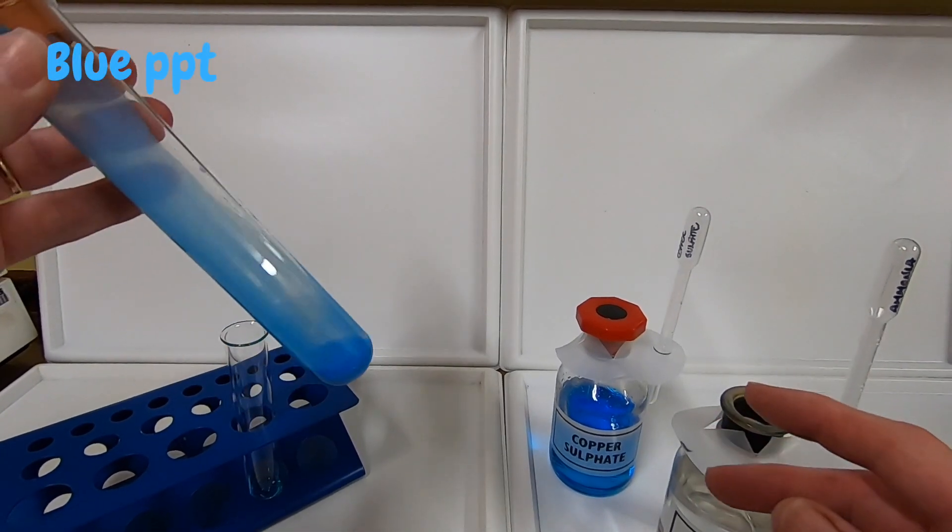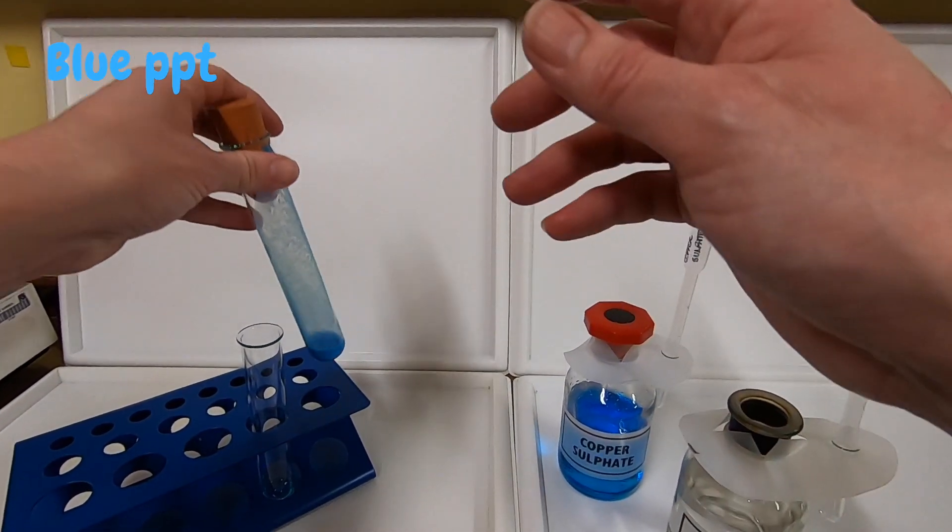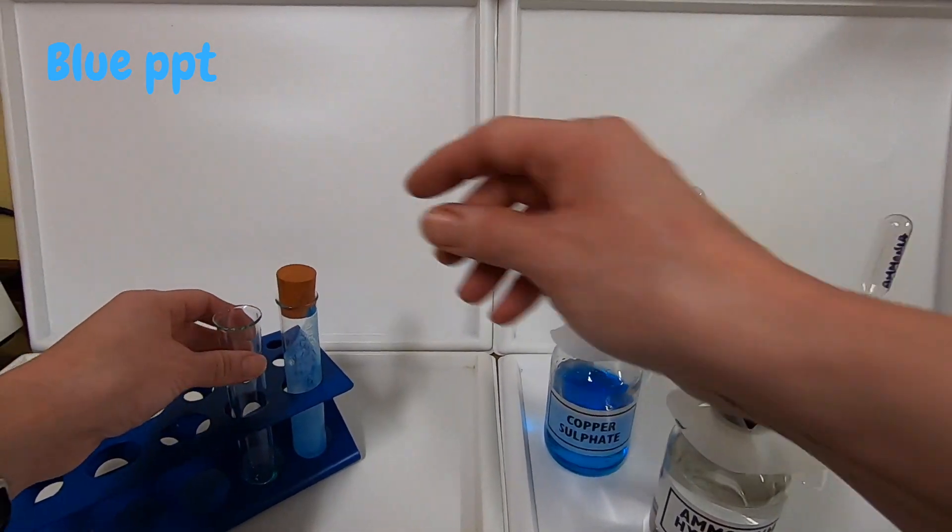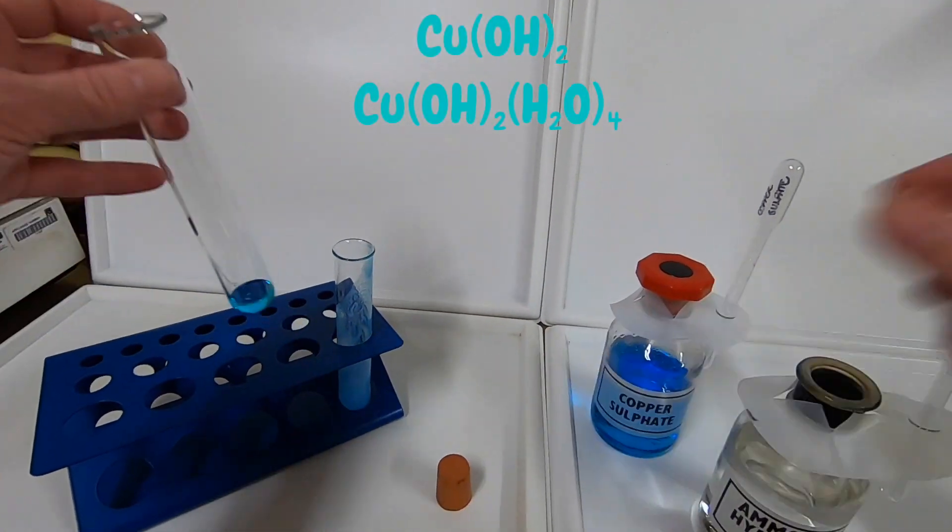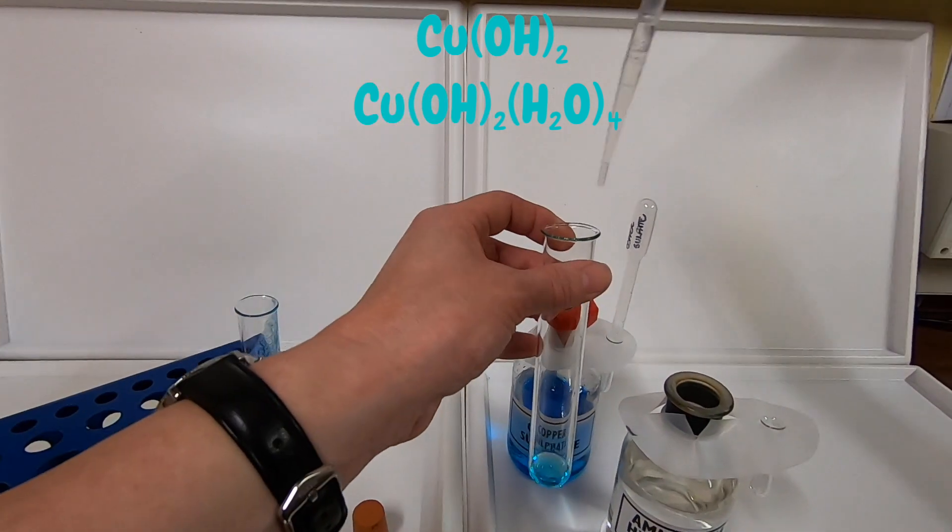You can see that a blue precipitate has formed. This is a solid that forms when two solutions are mixed. In this case, it is copper hydroxide. The copper hydroxide is insoluble, so it forms as a solid.